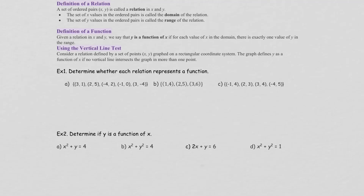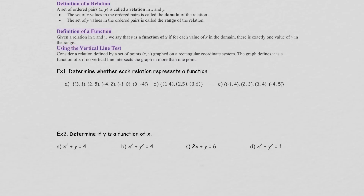Today we're going to talk about functions and graphs. The definition of a function: given a relationship of x and y, y is a function of x if for each value of x in the domain there is exactly one value of y in the range. In other words, all x values must have exactly one y value — all domains have one range.